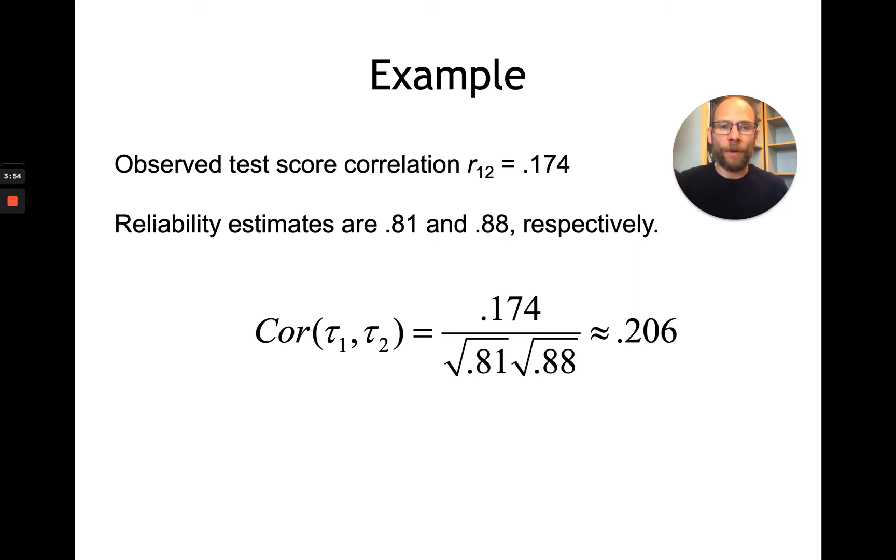So you can see the observed correlation is slightly lower than the true score correlation that we estimate here. And that's because the measures are not perfectly reliable. The reliabilities are fairly high, fairly close to one, but they're not perfectly one. And therefore, there's some shrinkage here, so to say, in the observed correlation. Measurement error watered this correlation down. And so we would be underestimating the true correlation slightly when using our observed correlation.